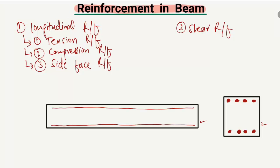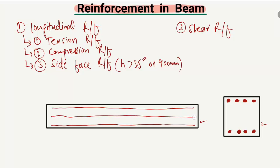Side face reinforcement is provided when the depth of the beam is greater than 36 inches or 900 millimeters. Then reinforcement is provided at the center portion of the beam. They are known as the sidewise reinforcement or side face reinforcement. These are provided to avoid cracks in the beam because of the greater depth exceeding 36 inches or 900 millimeters.